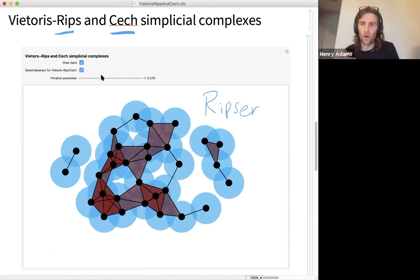But the point is that the persistent homology barcodes that you compute for either one are quite similar. So maybe you use the Čech complex and you get bars that, say, look like that.